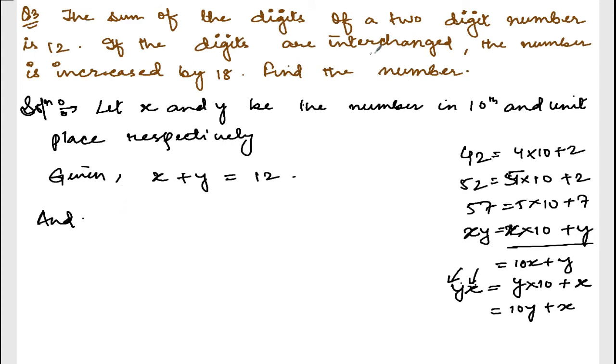Now, question is saying if the digits are interchanged, the number is increased by 18. So x, y is our number. That is, 10x plus y. If you interchange the digits, you are getting 10y plus x. And this number, if you interchange, increases by 18. So, 10x plus y equals 10y plus x minus 18. I hope I am clear to you. If not, please do write in the comment below.